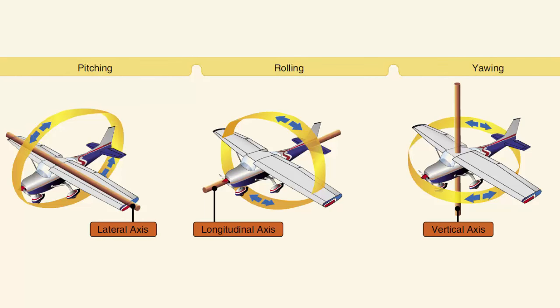The aircraft moves about the lateral axis when it pitches up or down. The vertical or yaw axis passes through the aircraft vertically passing through the center of gravity. The aircraft moves about the vertical axis when the nose moves left and right.